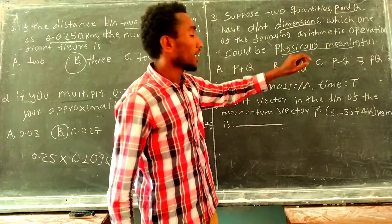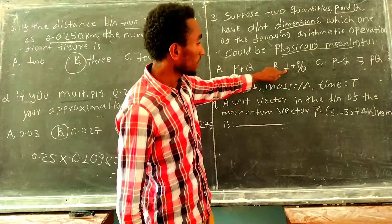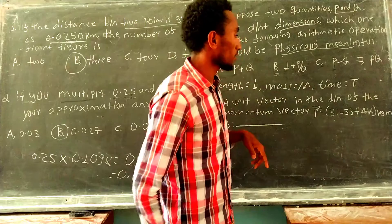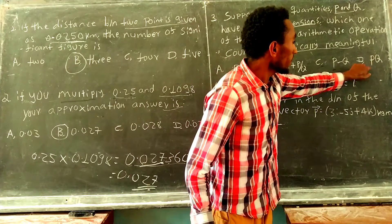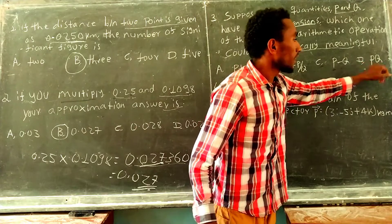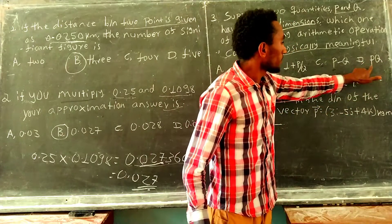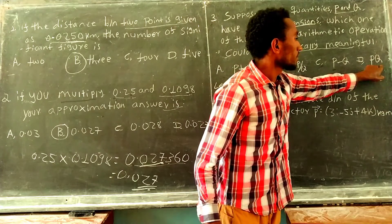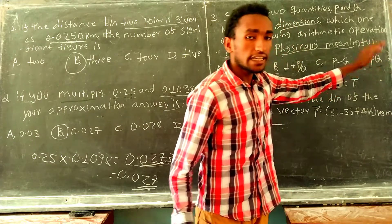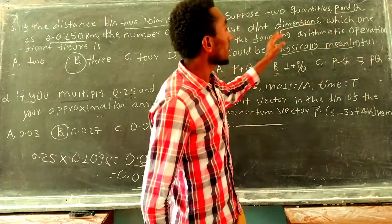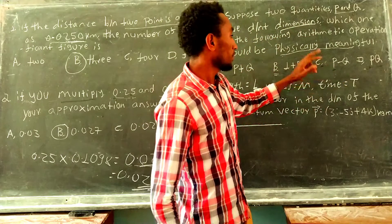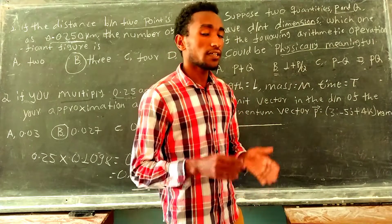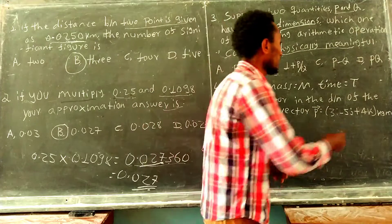The speed is 1 meter per second, so the unit has to be consistent. Different dimensional quantities — the answer to whether such an arithmetic operation is physically meaningful depends on the operation.